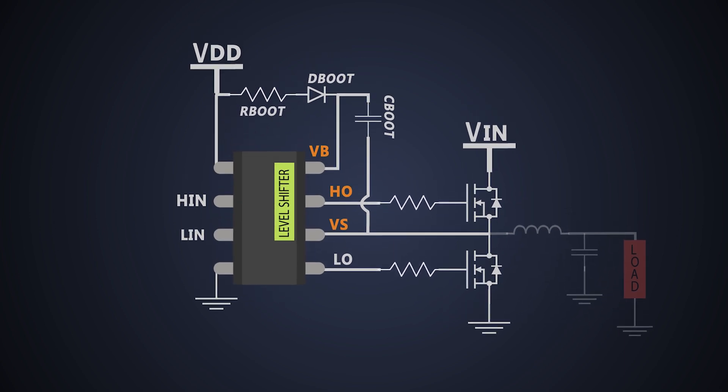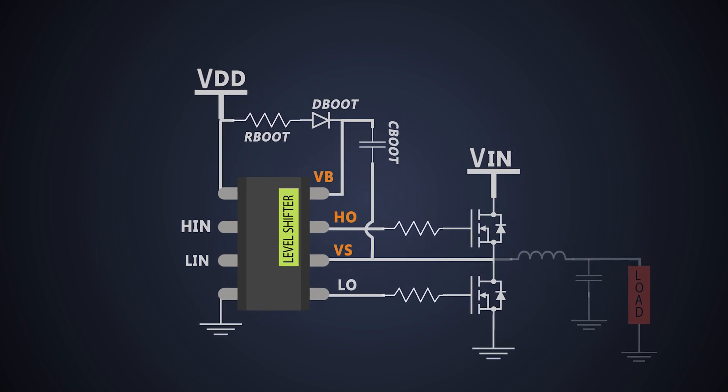Now we will see how this bootstrap circuit works. This is useful when there is a low side switch. Let's say there is a synchronous buck converter circuit. It has both high side and low side switches. We already know the working of a buck converter. Both transistors should switch one after another to give the required step down voltage.